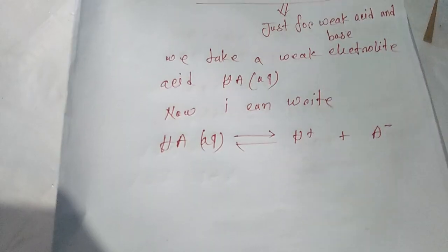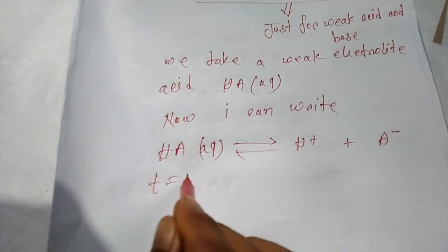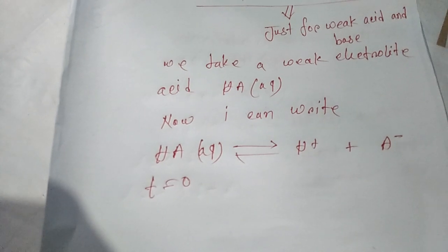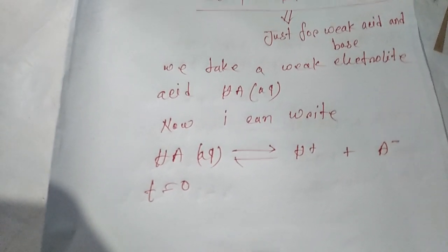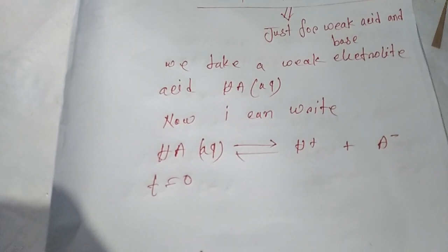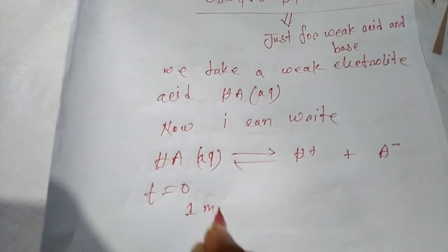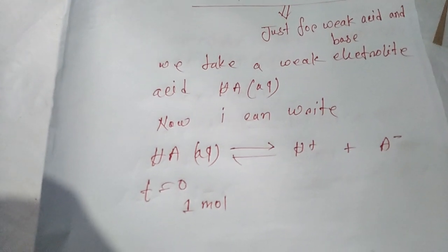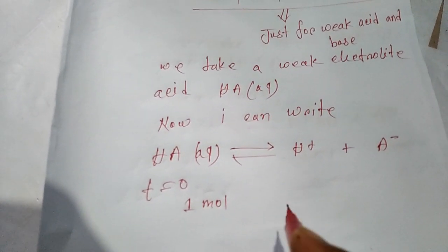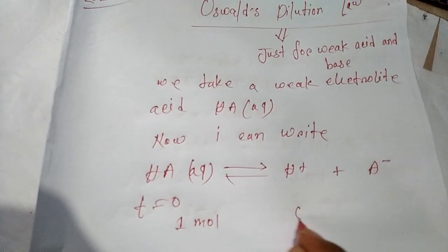At t equals 0, let's say the maximum concentration or maximum mole is 1 mole. We want any product, 0 mole, 0 mole.